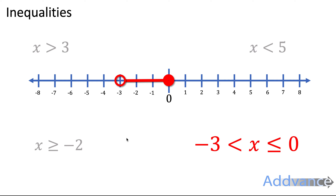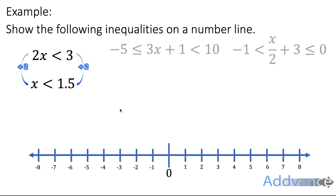For the first example, 2x is less than 3. We start by rearranging the inequality, dividing both sides by 2 as you would with an algebraic equation, giving x is less than 3 halves. 3 halves is the same as 1.5, so this inequality becomes x is less than 1.5. We plot that by drawing an open circle at 1.5 — between 1 and 2 — and drawing a line going downwards.